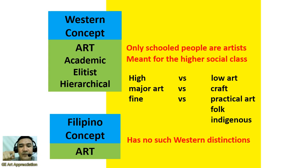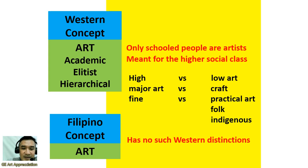When we say elitist, these are meant for the higher social class — the wealthy, the elitists. Hierarchical — it is hierarchy through the word hierarchy. We have the high or major art, which is fine art, versus the low art: craft, practical art, folk, or indigenous art. That's why we have a subject called Fine Arts, like in UP Diliman.